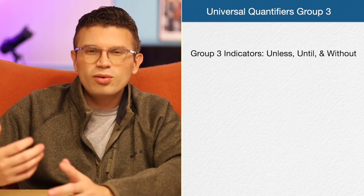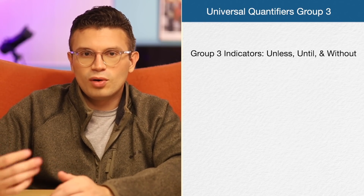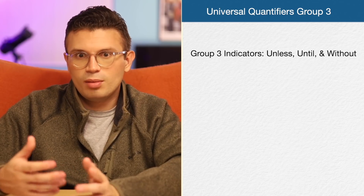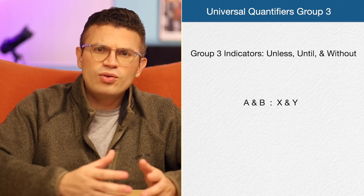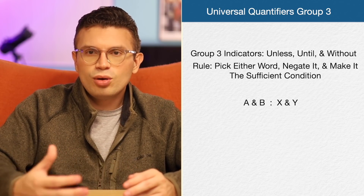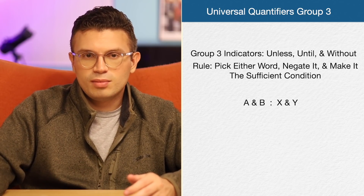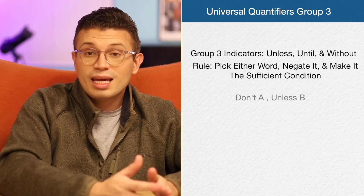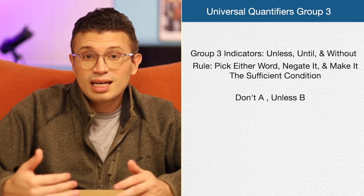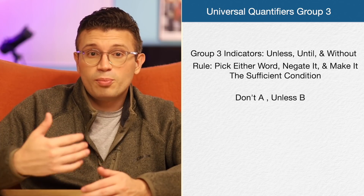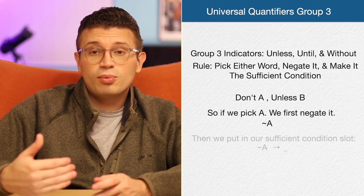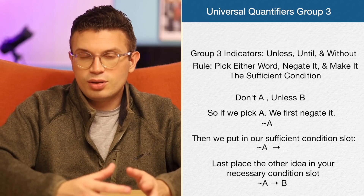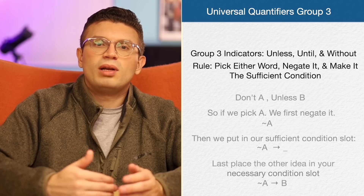Now on to group three. Group three words are a little bit harder than group one and group two — a little more involved. In a conditional statement you have at least two ideas — we can call them A and B. If you have a group three word present, what you do is pick either idea, negate it, and make it the sufficient condition. Our group three words are: unless, until, and without. So if we have 'don't A unless B,' you pick either word, negate it, and put it in your sufficient condition slot. If we pick A and negate it, we get 'not A' in the sufficient condition slot, and we place the other idea in the necessary condition slot. We're left with: not A, then B.